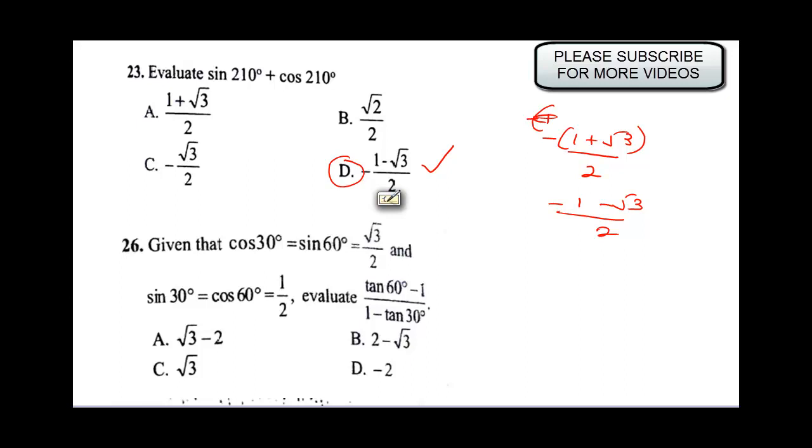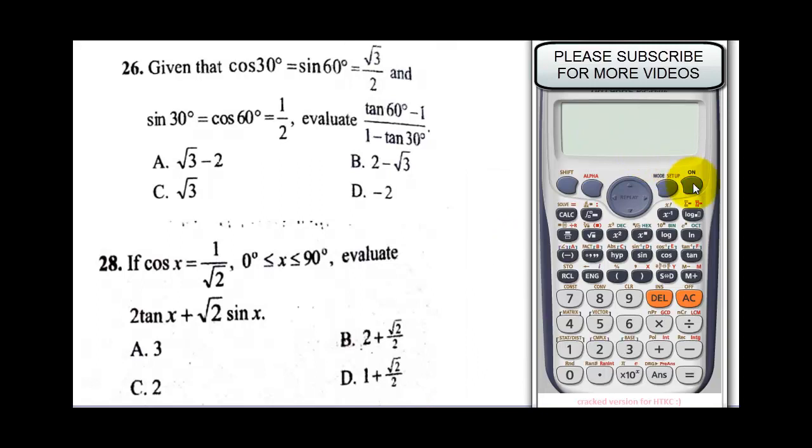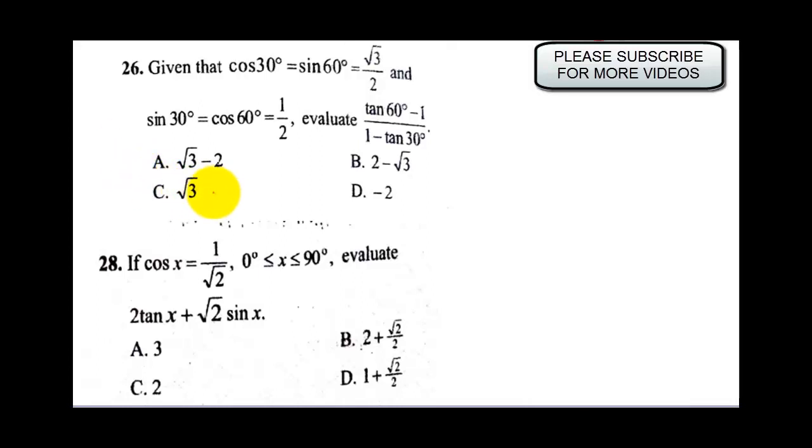Now the next question says evaluate (tan 60° minus 1) over (1 minus tan 30°). I'll bring up my fraction button: tan 60 brackets, minus 1, bring my arrow key down, 1 minus tan 30, close my brackets. It tells me my answer is root 3, and as easy as that, I know my answer is C.